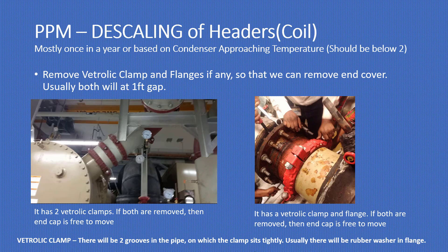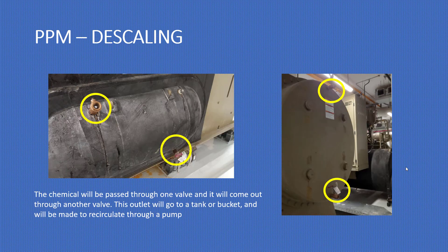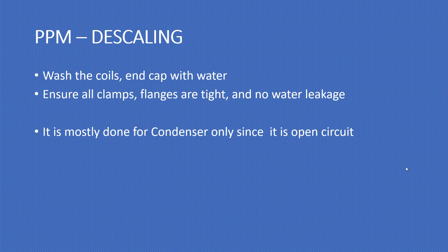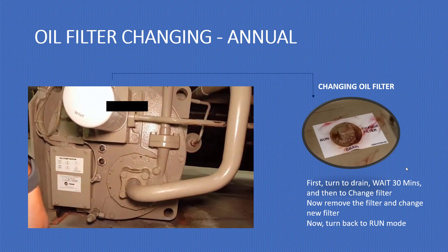For PPM descaling of headers — mostly once a year or based on condenser approach temperature — do descaling only if required. Remove the Victaulic clamps and flanges so the end cap is free to move. There will be two grooves in the pipe on which the clamp sits tightly; usually there is a rubber washer in the flange. For the de-scaling setup, a chemical is passed through one valve and comes out through another — this outlet goes to a tank and is recirculated using a pump. After descaling, remove the end cover, wash the water box coils and end cap with water, and ensure all clamps and flanges are tight with no water leakage. Descaling is mostly done for the condenser only, since it is an open circuit.